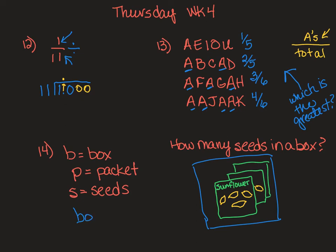That box is going to be equal to some number of packets times the number of seeds. If I have four seeds in this packet and I have three packets, then in that whole box I have 12.